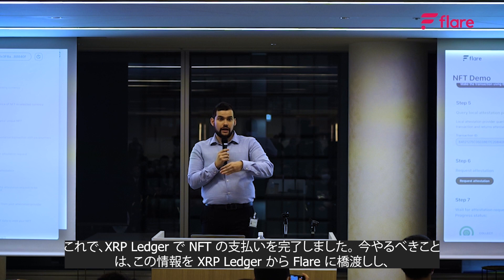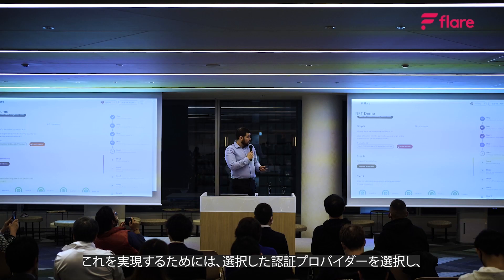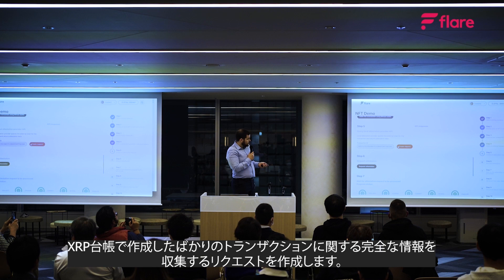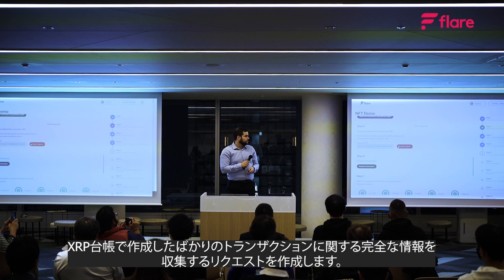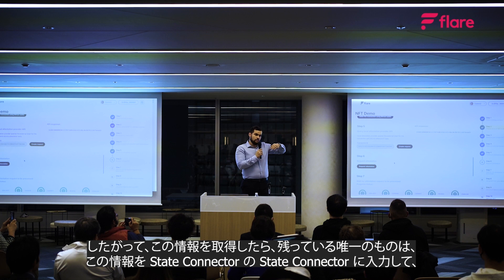We've paid for our NFT on the XRP Ledger. The only thing we need to do now is bridge this information from the XRP Ledger to Flare and prove it there. To achieve this, we select an attestation provider of our choice and create a request to gather full information about the transaction we just created on the XRP Ledger. The API returns the full information connected to this request.